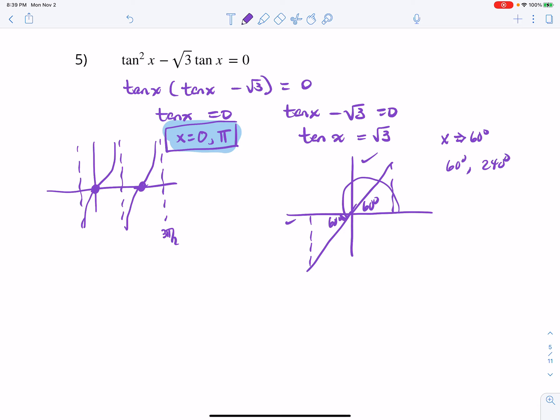And converting those to radians, we would have pi over 3 and 4 pi over 3. So, this equation has four solutions: zero, pi, pi over 3, 4 pi over 3. And there we have it. So, as long as you know your ratios for tangent, this one went relatively quickly.